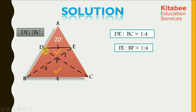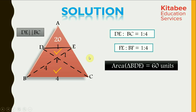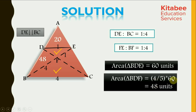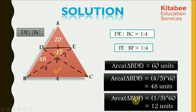In the second part, we calculated the area of triangle BDE as 60 units. In this triangle, DF is a line that divides BE in the ratio of 4 is to 1. So we divide this area of 60 units in the ratio of 4 is to 1. Area of triangle BDF would be equal to 4 fifths of 60 units, which is equal to 48 units. And area of DFE must be 1 fifth of 60, so area of triangle DFE comes out to be equal to 12 units.